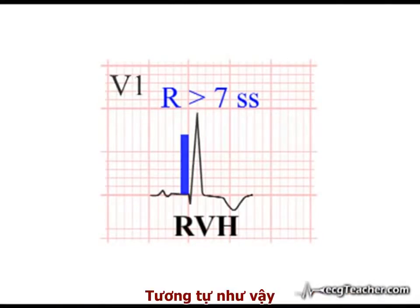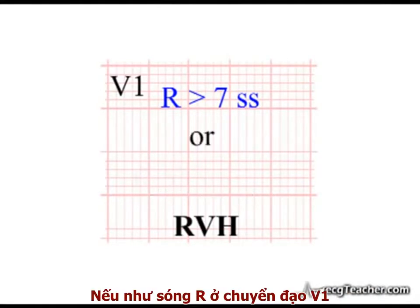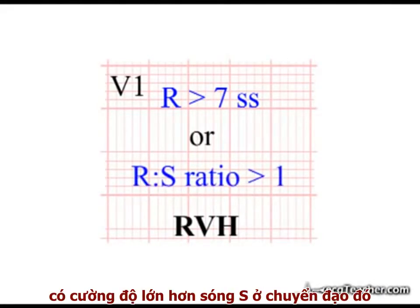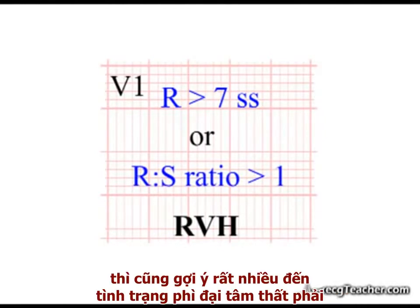Equally, if the R wave in lead V1 is higher in amplitude than the S wave in that lead, this is also strongly suggestive of underlying hypertrophy.